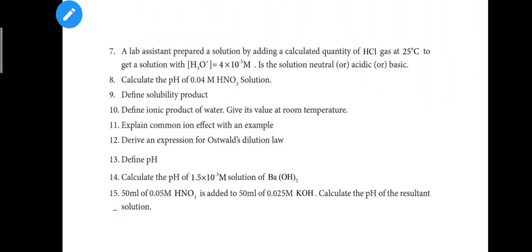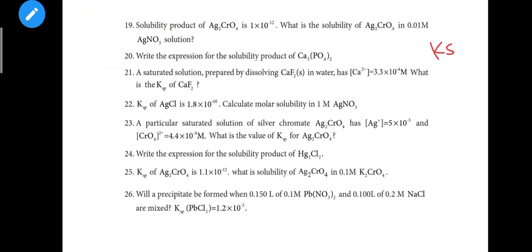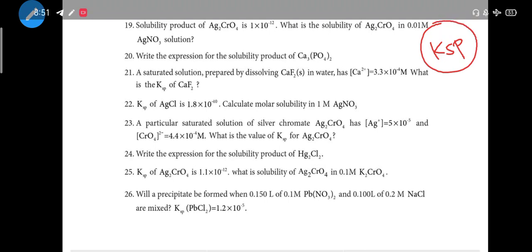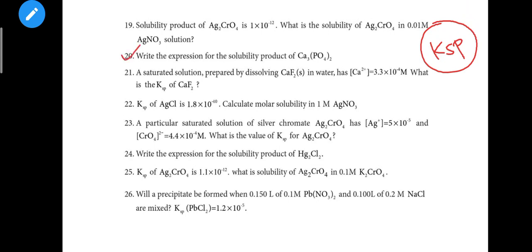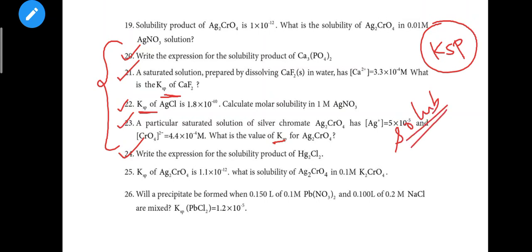Next is Ionic Equilibrium. Question 8: calculate the pH of 0.04 — a very important and easier problem. Question 14: pH of 1.5 × 10⁻³ — also an important problem. Question 21, 22, 23, and 24 are all KSP-related (solubility product) problems. Videos on solubility product will be uploaded — these KSP problems have good chances of appearing.